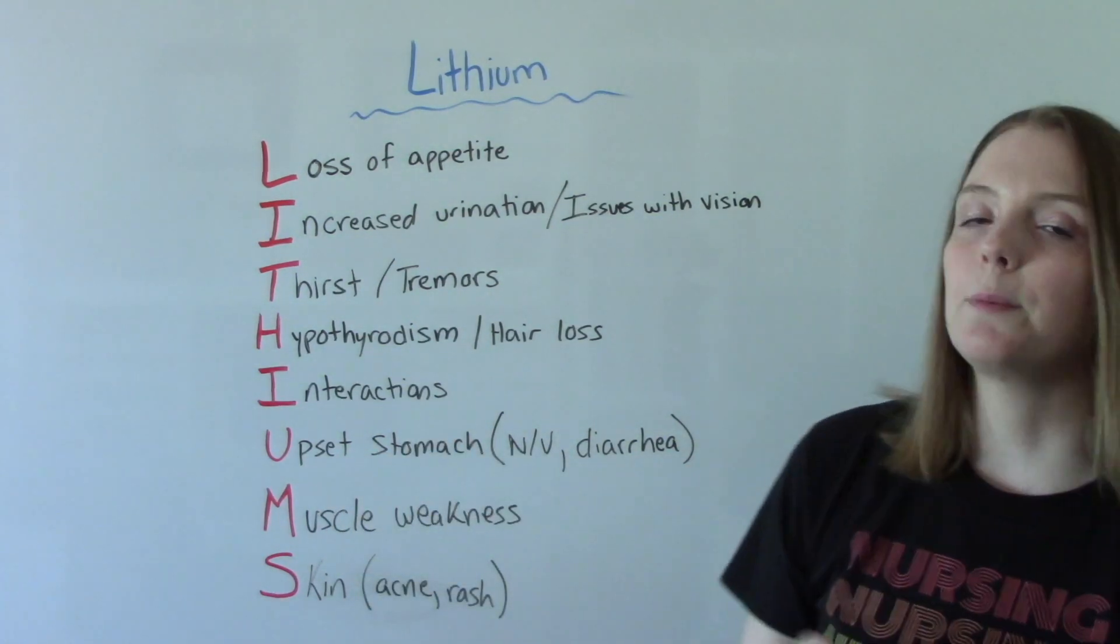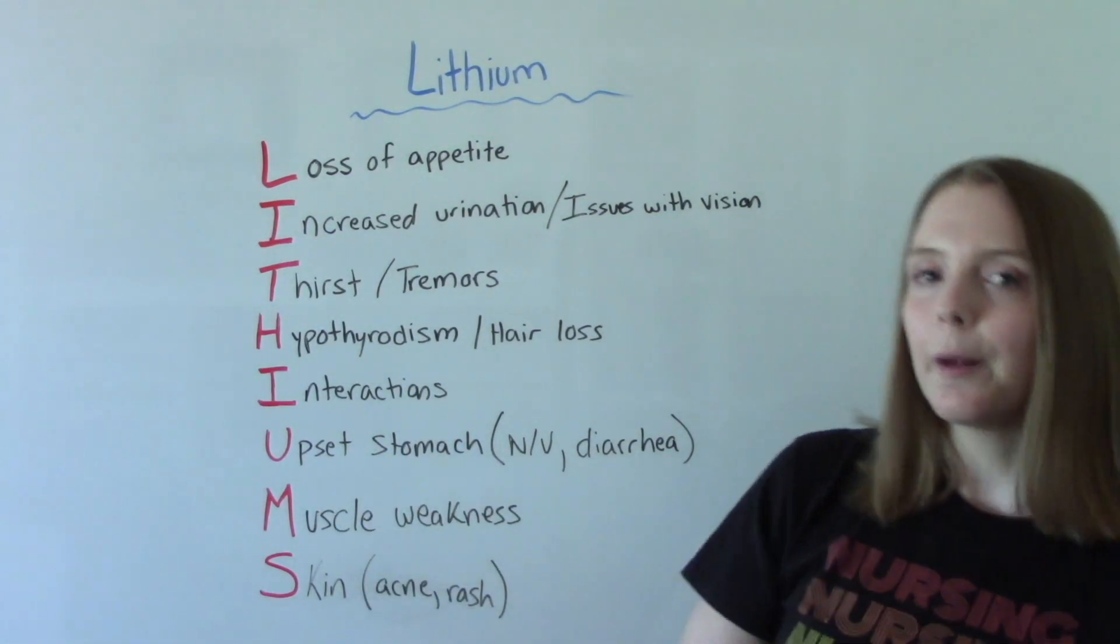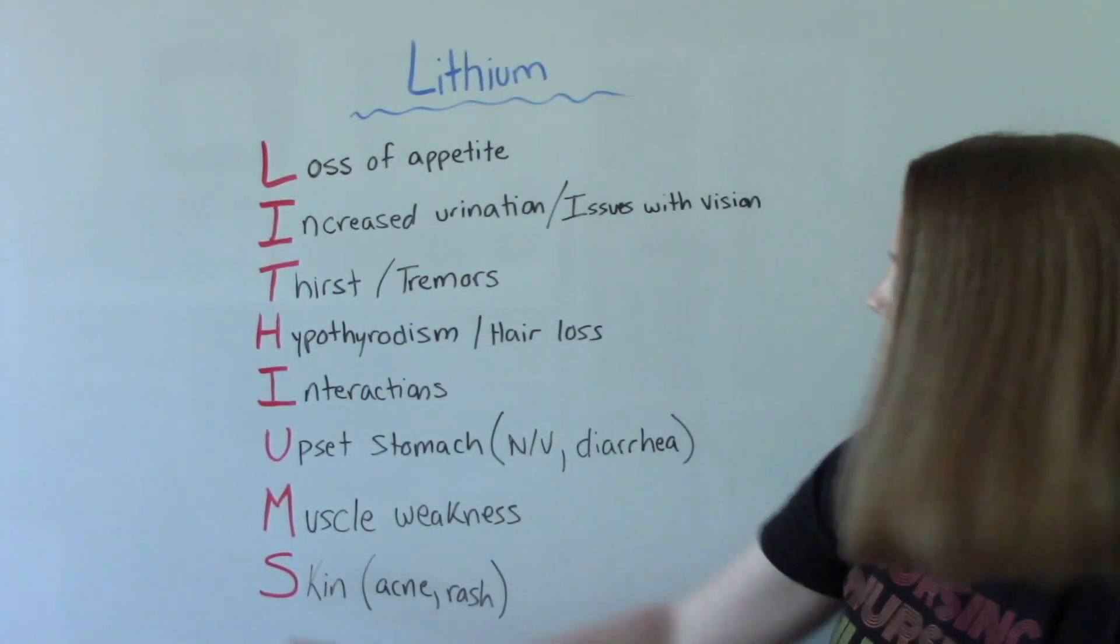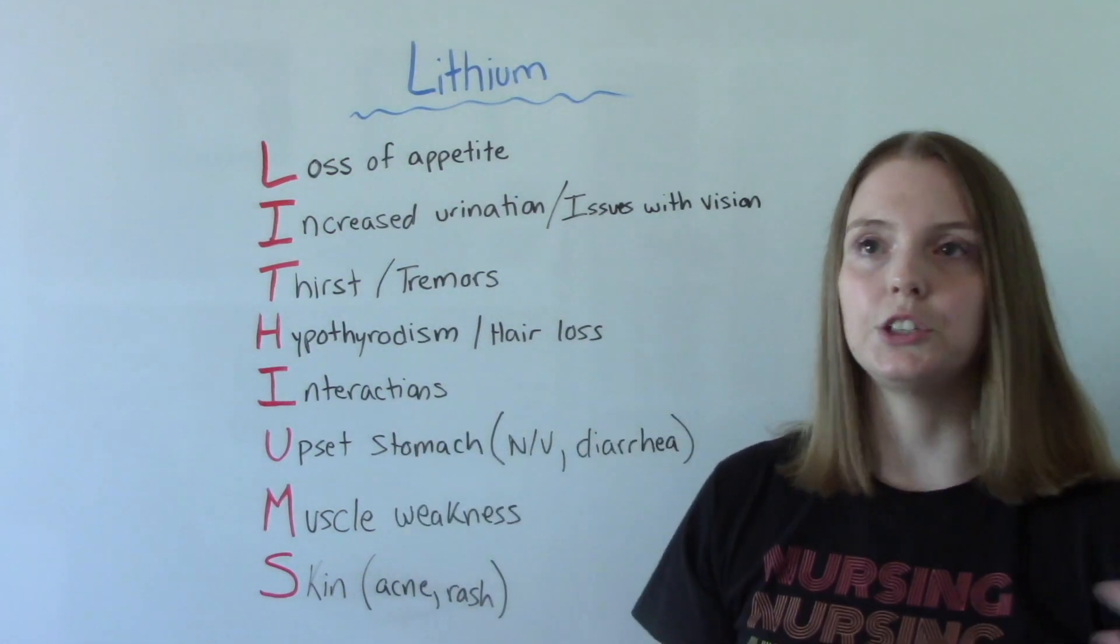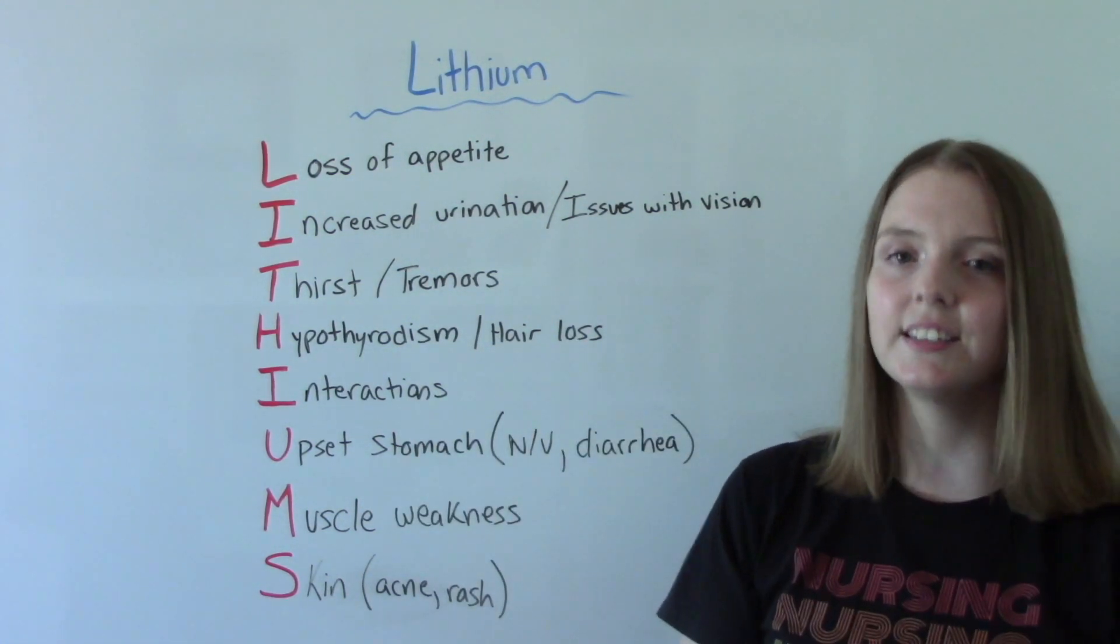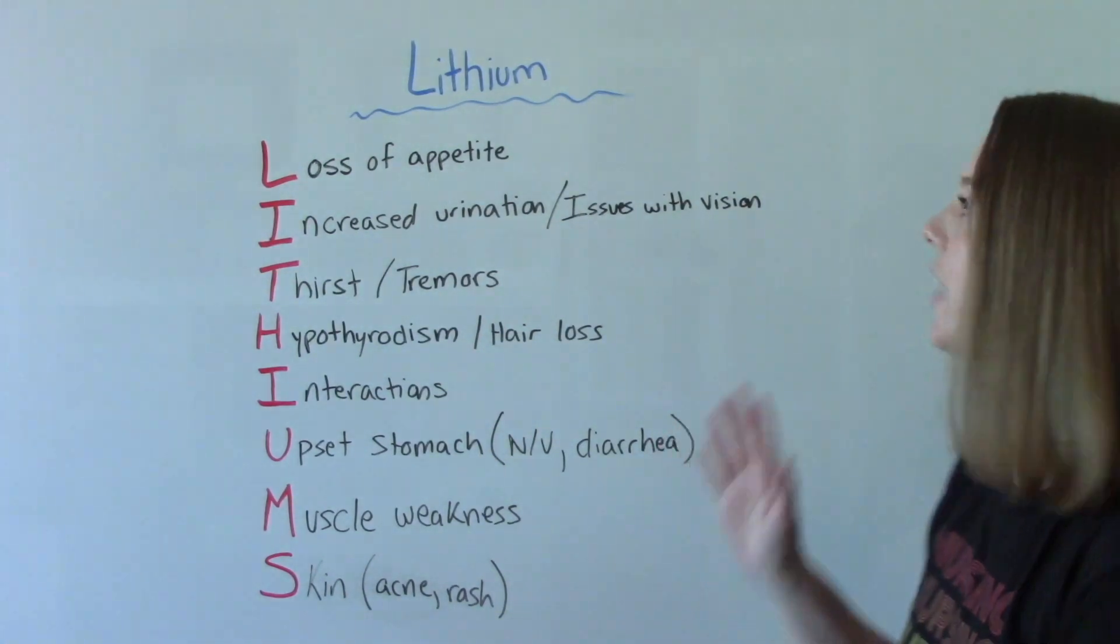U is for upset stomach, things like nausea, vomiting, diarrhea. M is for muscle weakness. And S is for skin issues, things like acne, psoriasis, rashes. Those can occur as side effects of lithium.